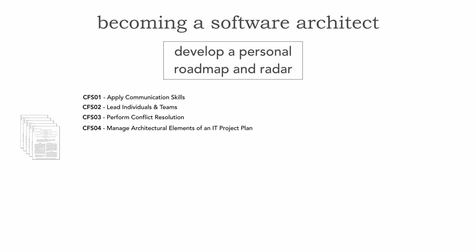Another skill is managing architectural elements of an IT project plan — in other words, what aspects of architecture need to be coordinated within the overall plan and helping manage those. It's also about understanding the business aspects, understanding core business drivers, and talking with business stakeholders to really understand what the business drivers and goals are within a particular project.